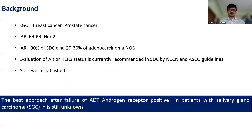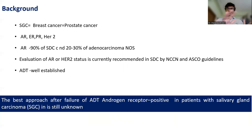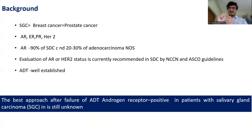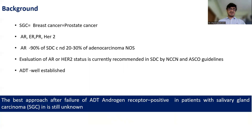Salivary gland cancer, breast cancer, and prostate cancer are similar biologically — they express androgen receptor, estrogen receptor, progesterone receptor, and HER2. Androgen receptor expression is seen in up to 90% of salivary duct cancers and 20–30% of other salivary gland cancers. Evaluation of androgen receptor and HER2 receptor status is recommended in all salivary duct cancers by both NCCN and ASCO. Androgen deprivation therapy as the treatment of choice is well established in AR-expressing salivary gland cancers. However, the best approach after failure of ADT is still unknown.